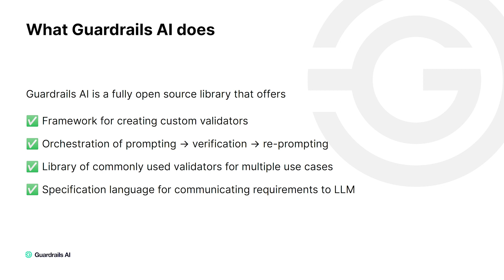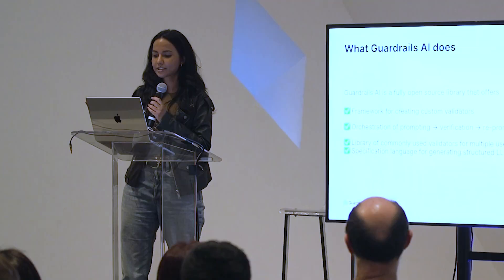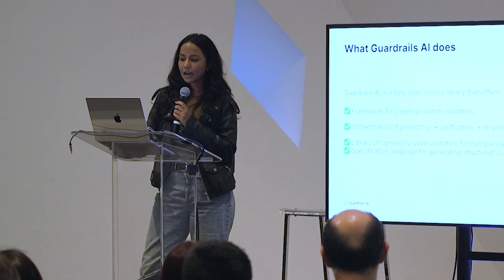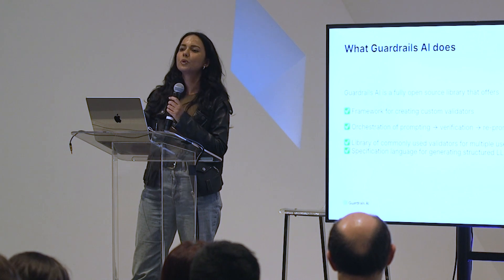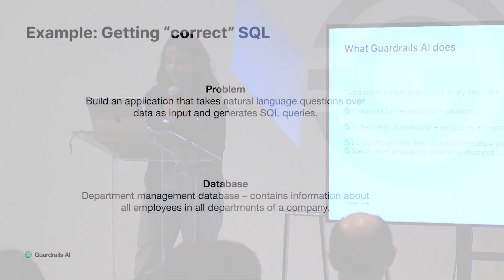Guardrails.ai is a fully open source library that offers: a framework for creating custom validators — you can create any number of custom validators beyond the examples shown; an orchestration system for prompting, verification, and re-prompting the LLM and managing that whole loop; a library of many commonly used validators across a bunch of use cases; and a specification language for generating structured LLM outputs and communicating your correctness criteria to the LLM.